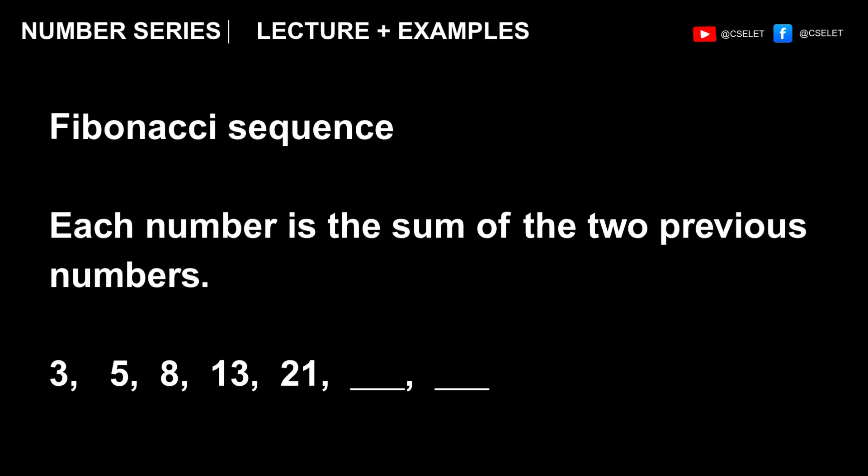Now, speaking of alternating patterns, I think the Fibonacci sequence is also worth mentioning. When you say Fibonacci sequence, it means that each number is the sum of two previous numbers. So for example, we have 3, 5, 8, 13, 21. So for this example, we have 3 plus 5 equals 8. 5 plus 8, 13. So 13 plus 21 is 34. Now, 21 plus 34 is 55.